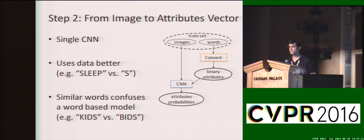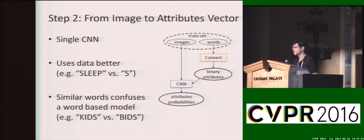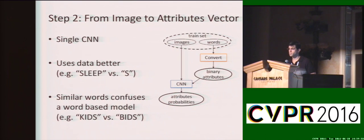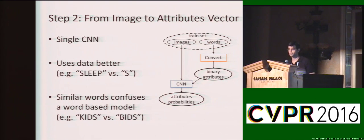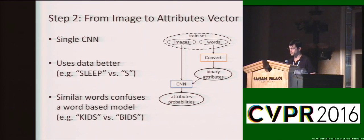The first benefit is that an attributes-based model utilizes the data much more efficiently. Consider an example of a training set of 1,000 words where the word 'slip' appears only twice. Training a word-based model to predict 'slip' is a hard task, whereas words which contain the letter S are much more frequent, making this task much easier to learn. Since handwriting recognition benchmarks usually have scarce amounts of data, this presents a big advantage.